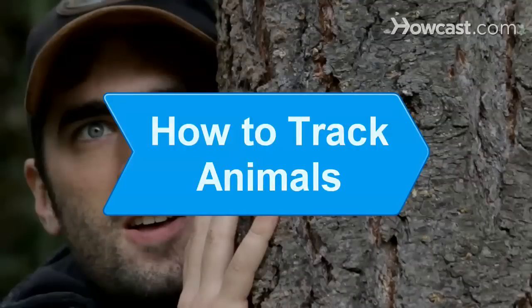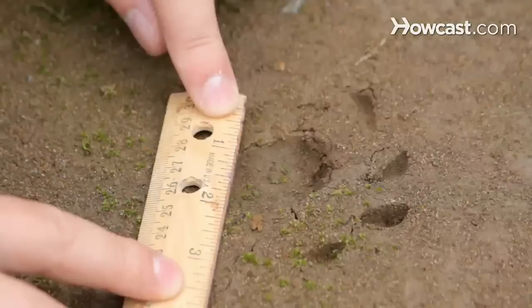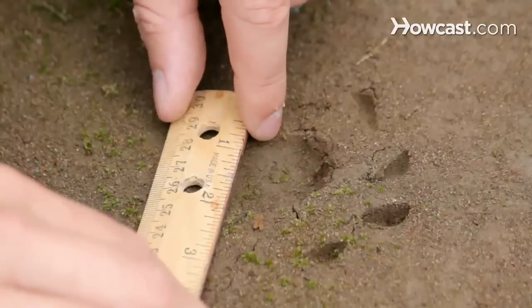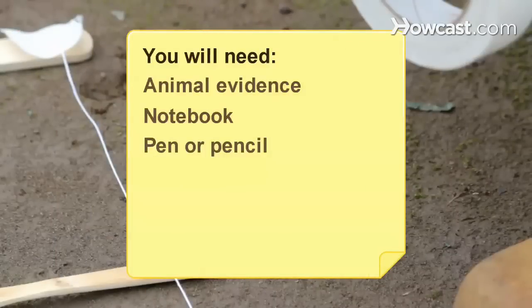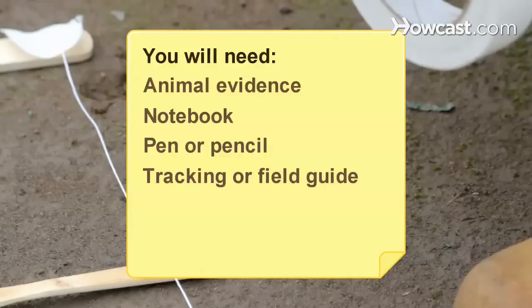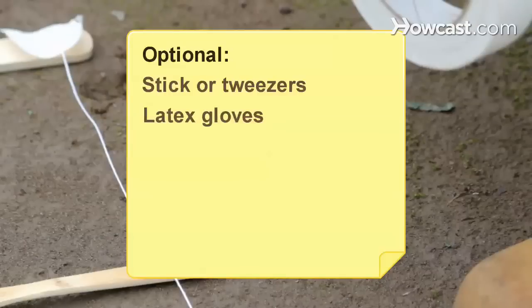How to Track Animals. Searching for critters? Use these tips to get on track. You will need: evidence of an animal, notebook, pen or pencil, tracking or field guide, ruler, popsicle sticks, string, tape, stick or tweezers, and latex gloves.